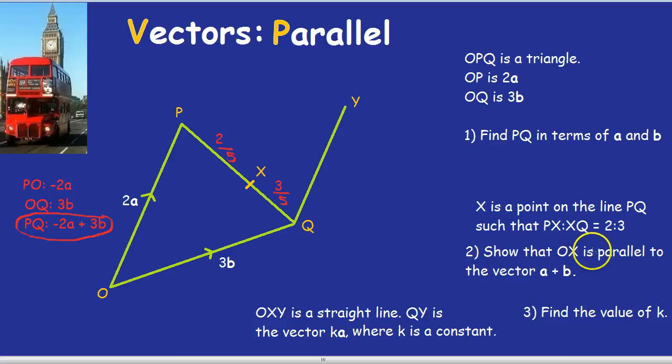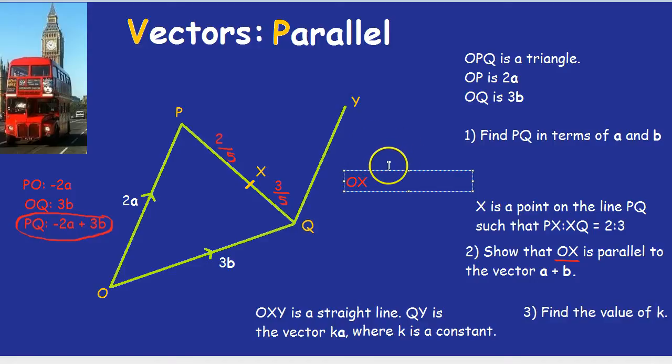Question 2, show that OX is parallel to the vector a plus b. Before we can find out if it's parallel we need to find out what OX is. So OX, how are we going to get there? We could go along here and then kind of backwards along PQ but that's more complicated. That would involve lots of minuses. So let's go O to P and then P to X because then we're going with the flow of P to Q which we already know. O to P is 2a. So we have 2a so far.